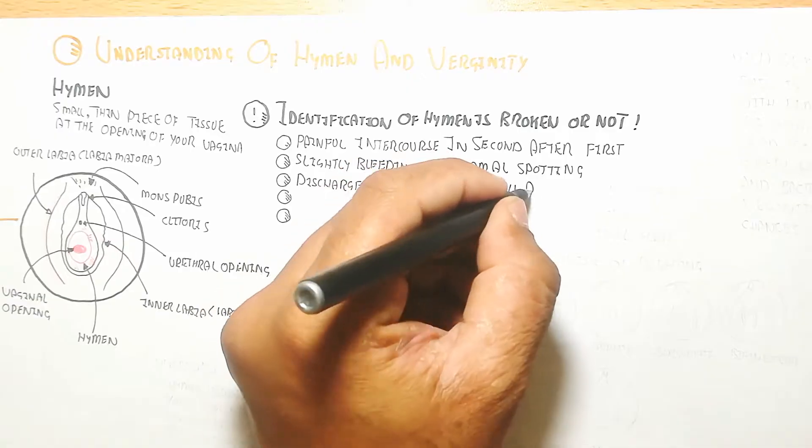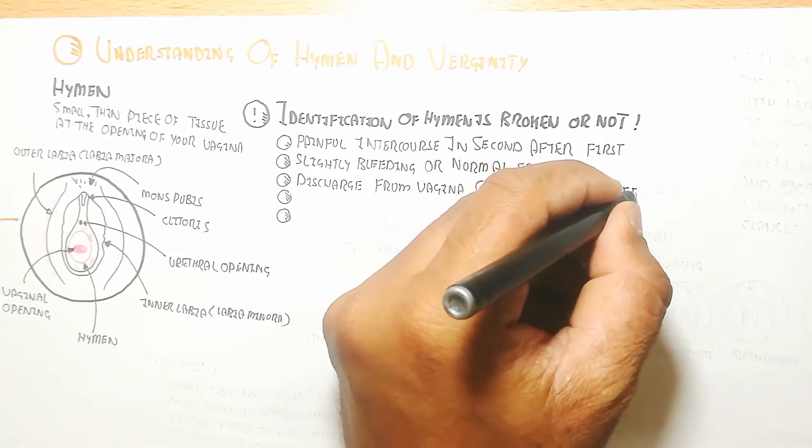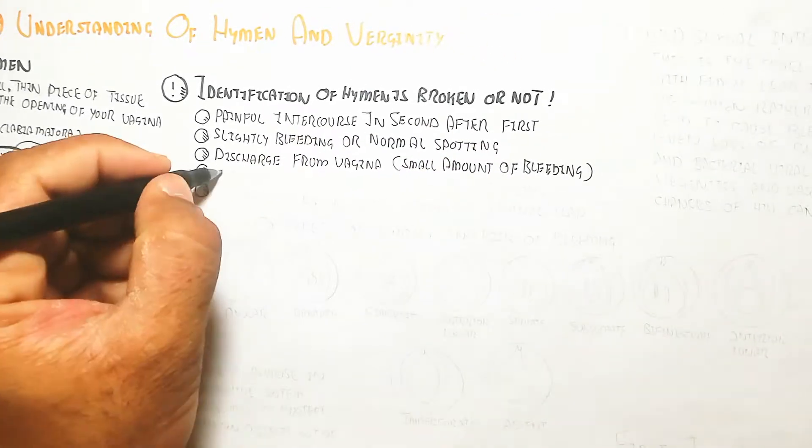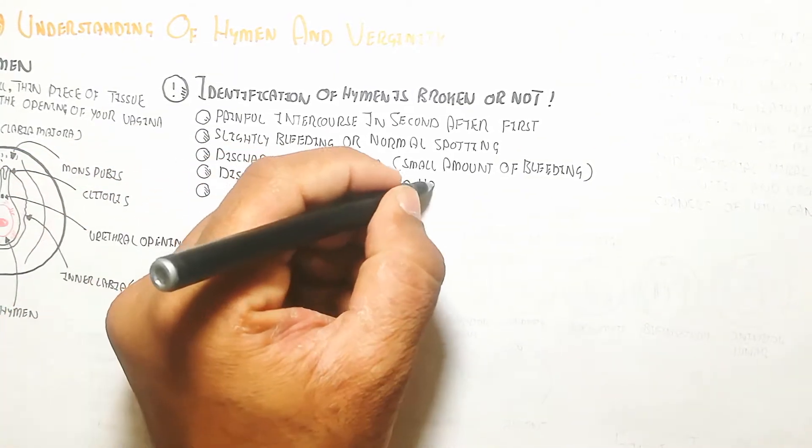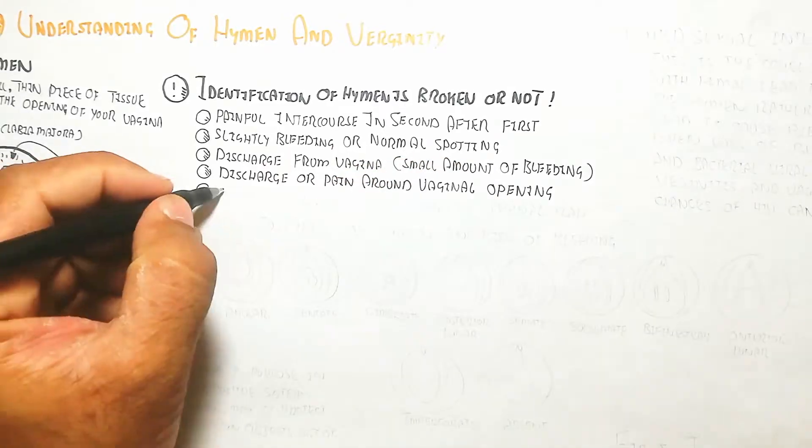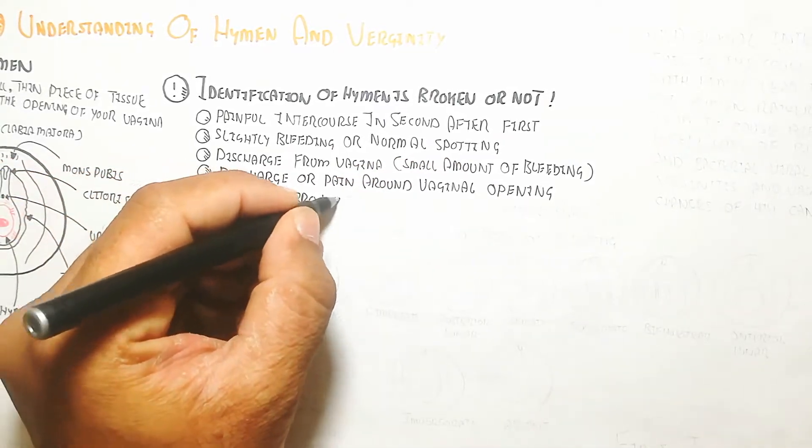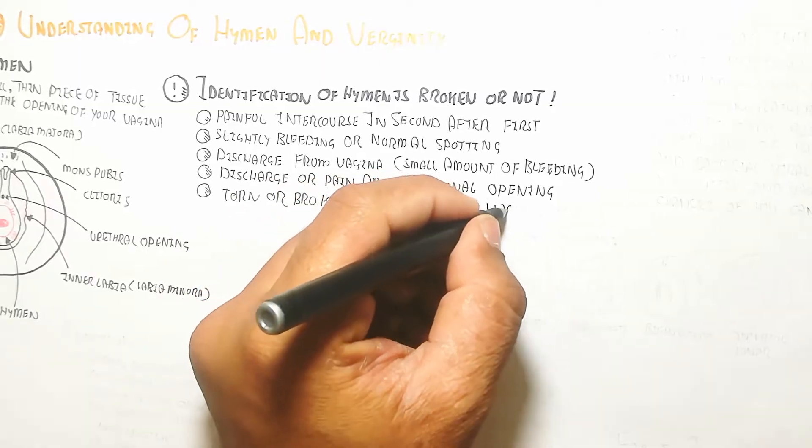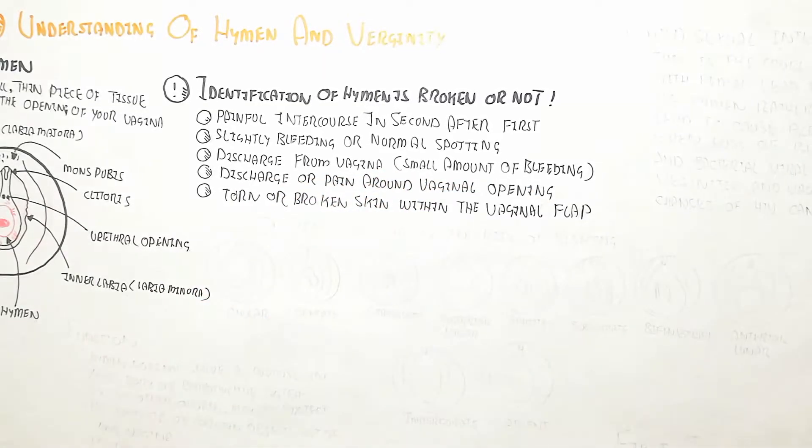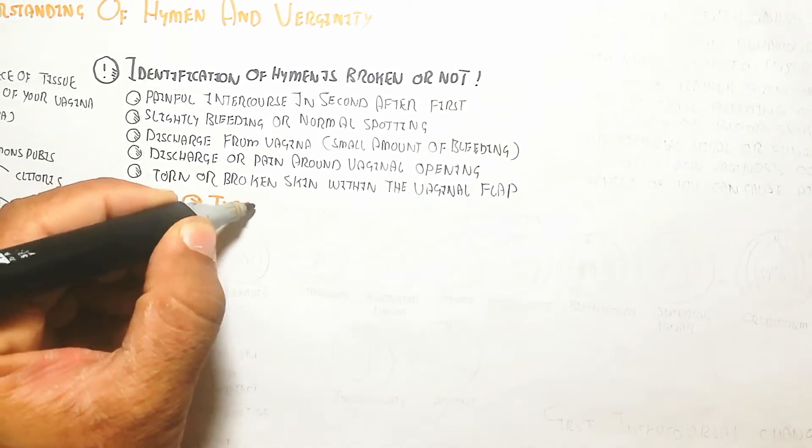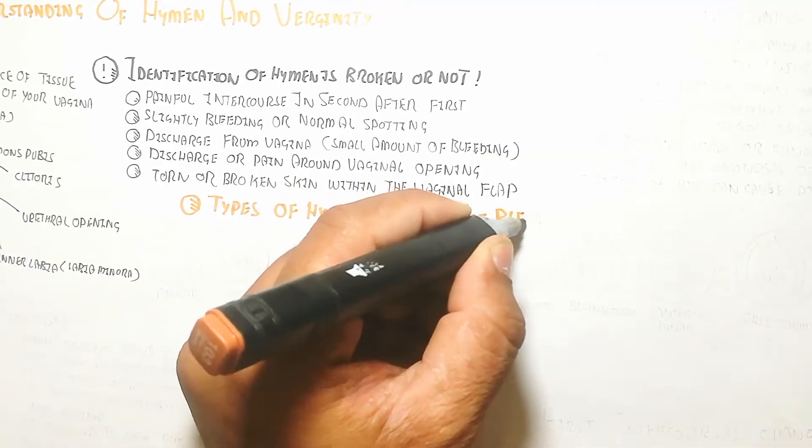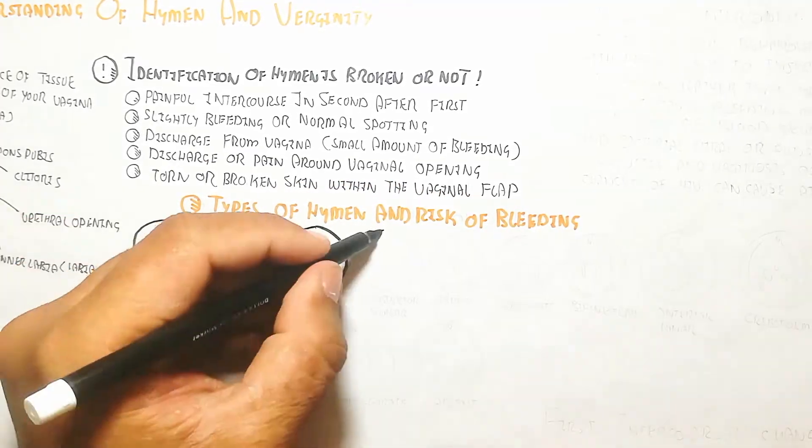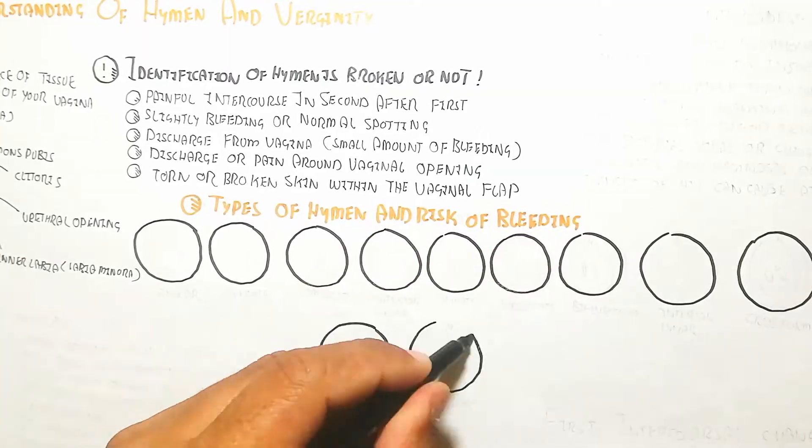After the first experience, it may be slightly painful with slight bleeding or normal spotting. Sometimes there's no bleeding if intercourse is done normally and smoothly. Discharge from vagina, small amount of bleeding, pain around vaginal opening, and torn or broken skin within the vaginal flap is possible.